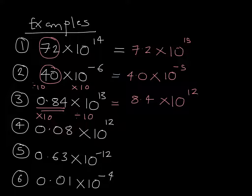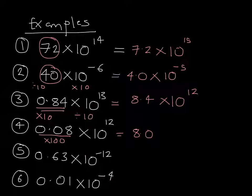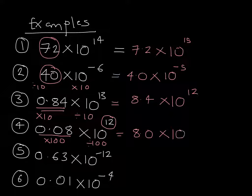Question 4: we have 0.08, which we can't have. We have to make this 8.0, which means we've multiplied not just by 10 but by 100. This means that 10 to the power of 12 has to be divided by 100 — dividing by 10 and dividing by 10 again — so the power becomes 10 times smaller twice, giving us 8.0 times 10 to the power of 10.